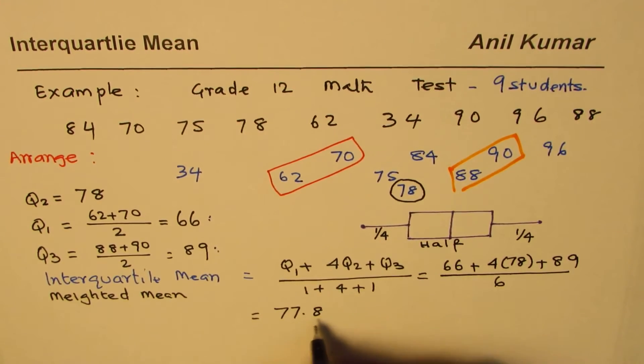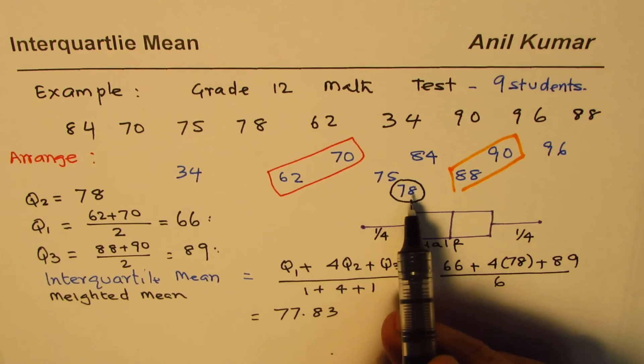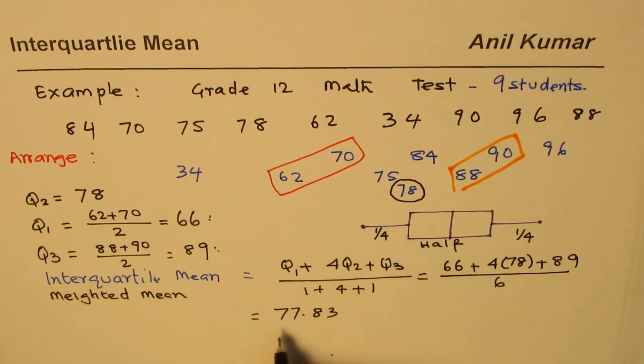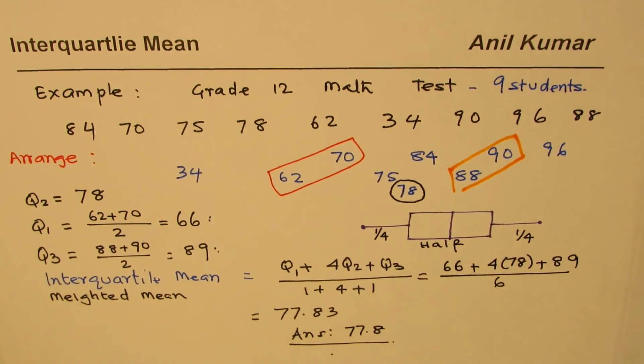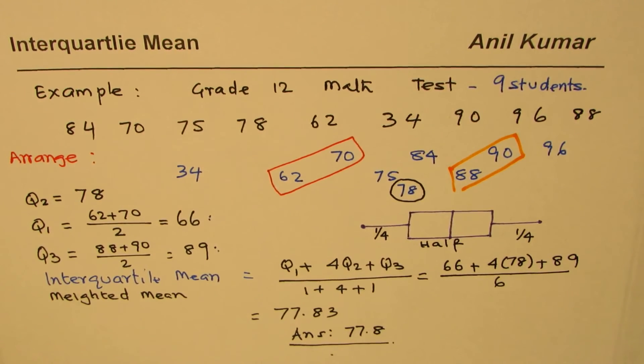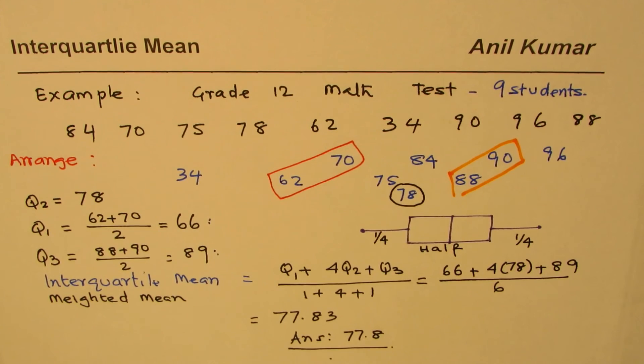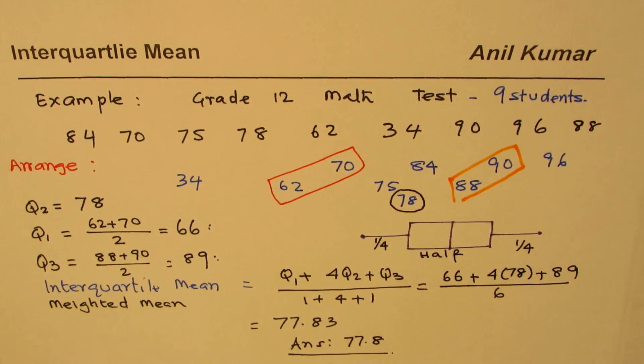So we can say that interquartile mean is very close to Q2 and it is 77.8. That is how we find interquartile mean. I hope that makes sense. I'm Anil Kumar, you can always share and subscribe my videos. Thank you and all the best.